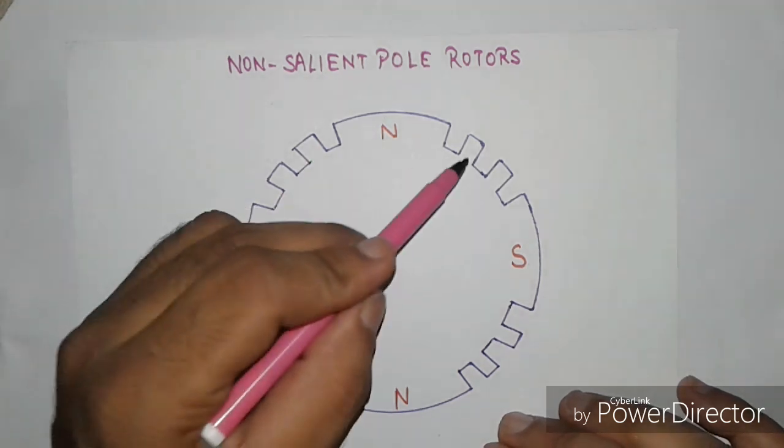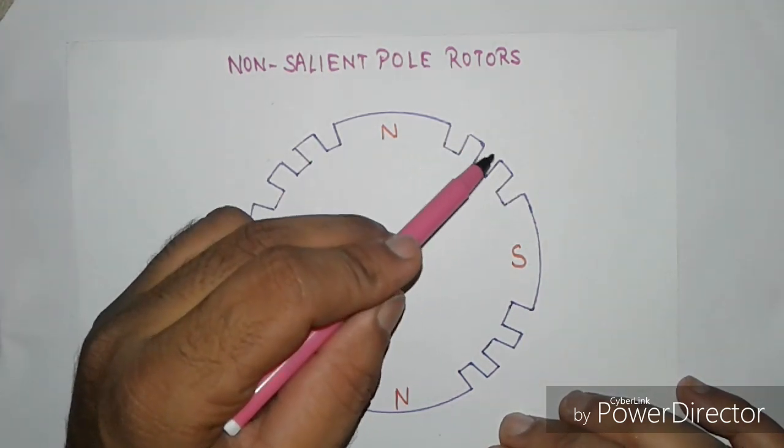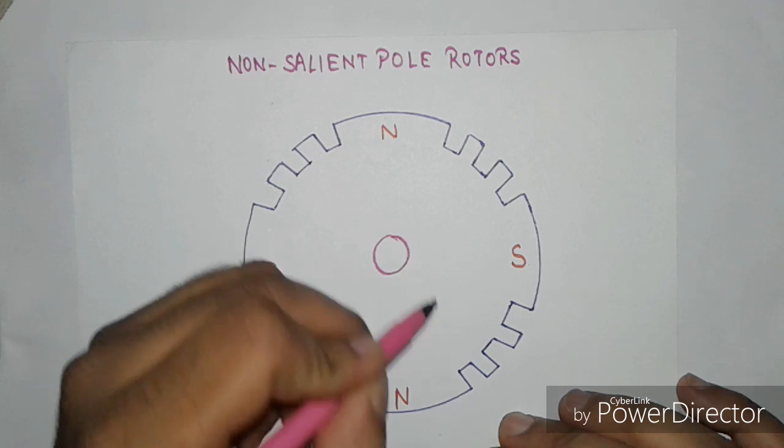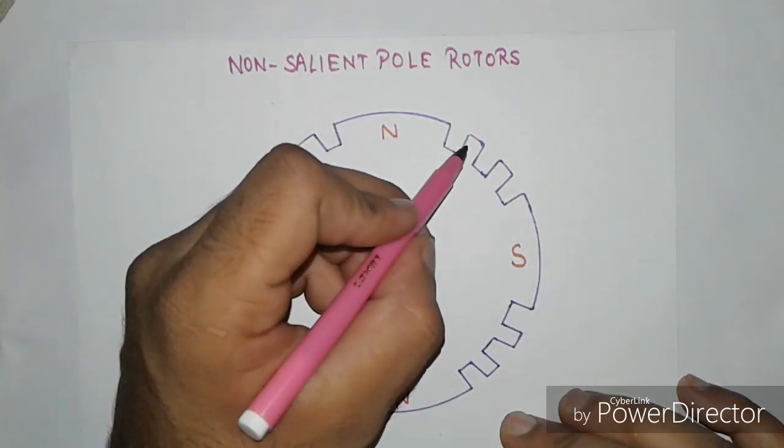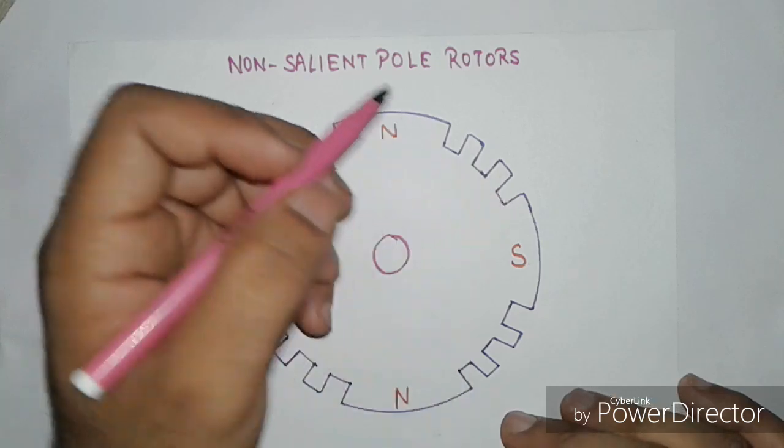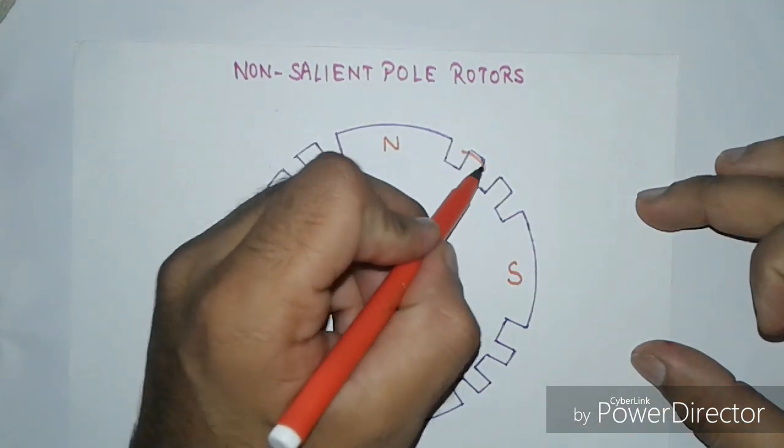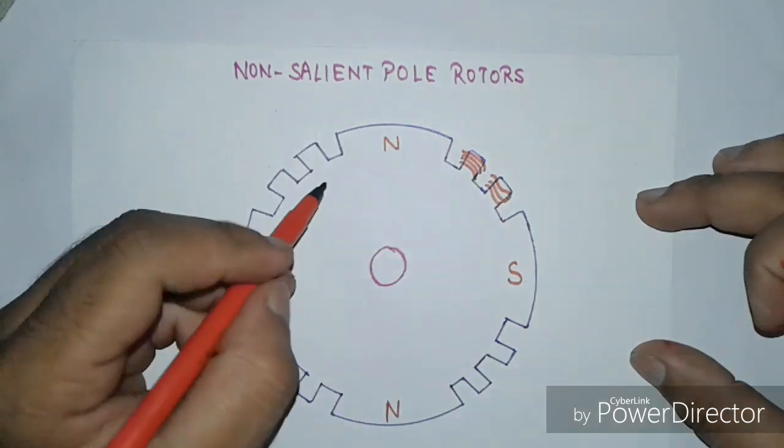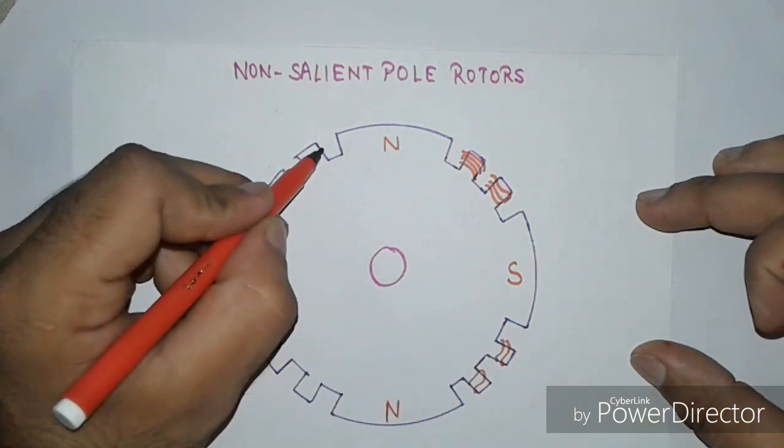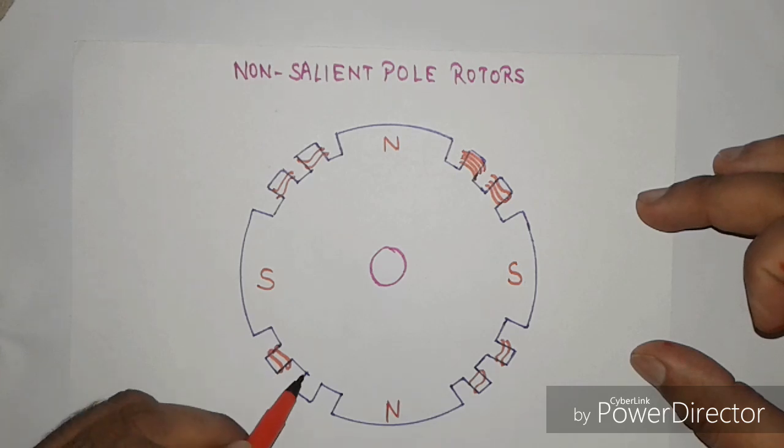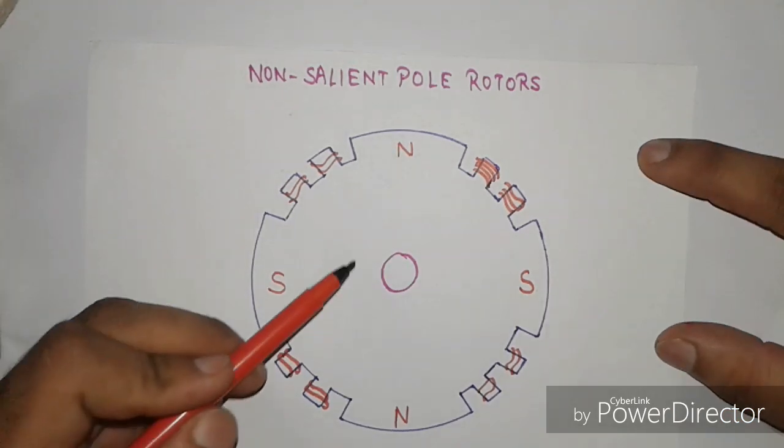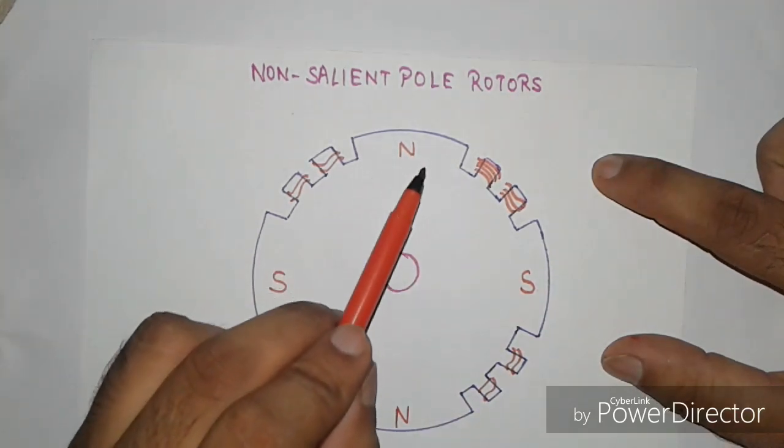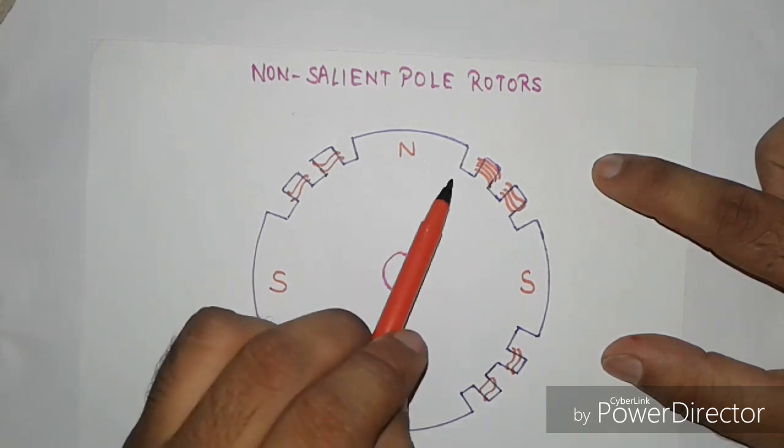In about two-thirds of the rotor periphery, slots are cut at regular intervals parallel to the shaft. The DC field winding is done in these slots. This winding is of distributed type. The unslotted portion of the rotor forms two or four pole faces.